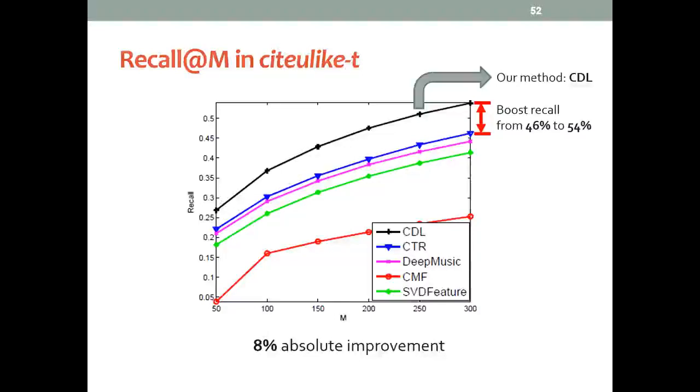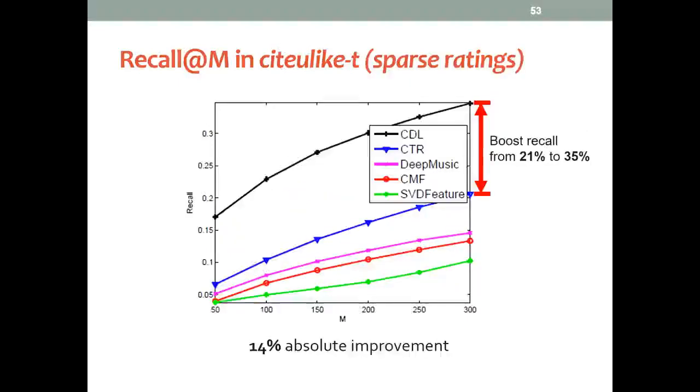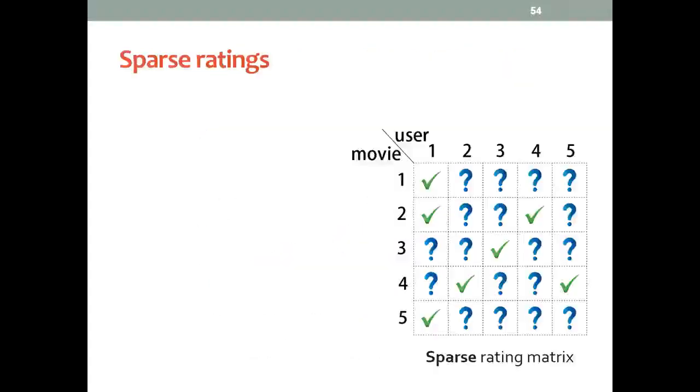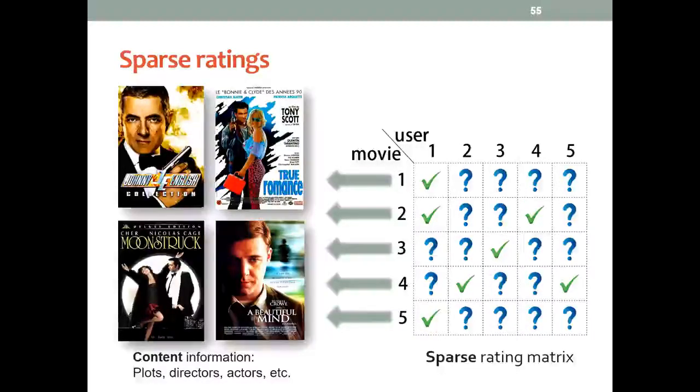Our method can significantly boost the performance. Note that this is already a very large improvement, and this margin gets even larger when we consider the sparse setting, when we only have very sparse ratings. This is because when the rating is sparse, the accuracy will rely more on the quality of the representation from the content, which happens to be the advantage of our model.